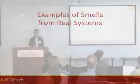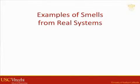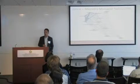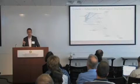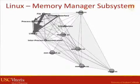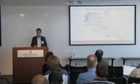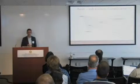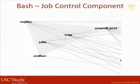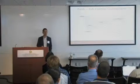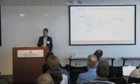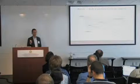Some examples. From the Linux architecture: the memory manager subsystem has relatively low cohesion — the submodules don't interact with each other much, but there's an incredible amount of interaction going outside of the memory manager subsystem. Is that really properly modularized? Any time you have to change anything in this subsystem, you have to start looking at a whole bunch of other places within Linux.